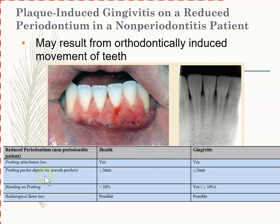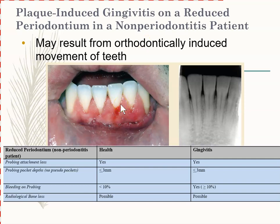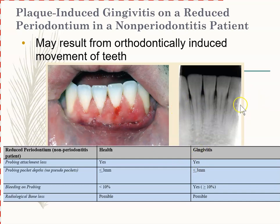Notice this case shows attachment loss — CAL — because there is recession. You might automatically think CAL means perio, but not necessarily. Sometimes CAL exists because of recession that's there not because of perio, but because of ortho or aggressive brushing — it's not a true CAL in the perio sense. So yes, you can see attachment loss due to recession, but that doesn't mean they have perio. This person is classified as gingivitis because they have intact bone.